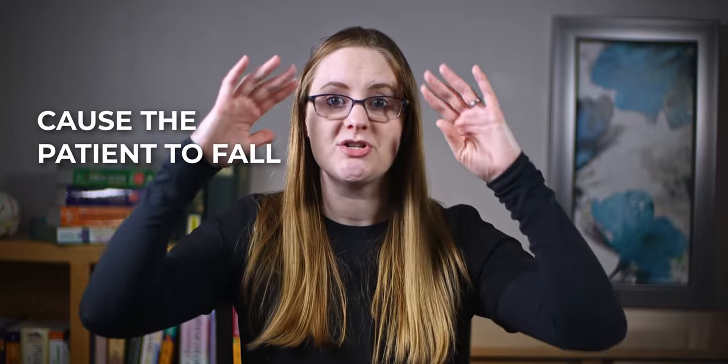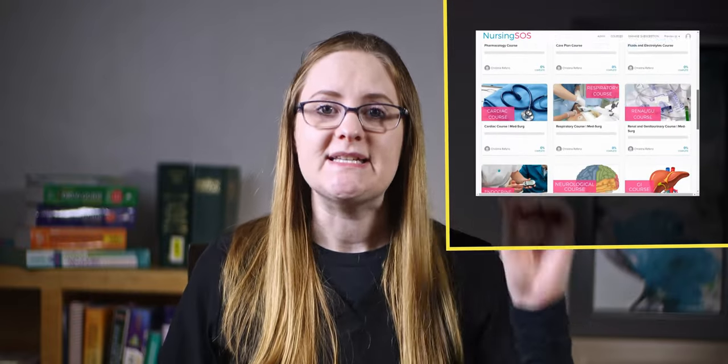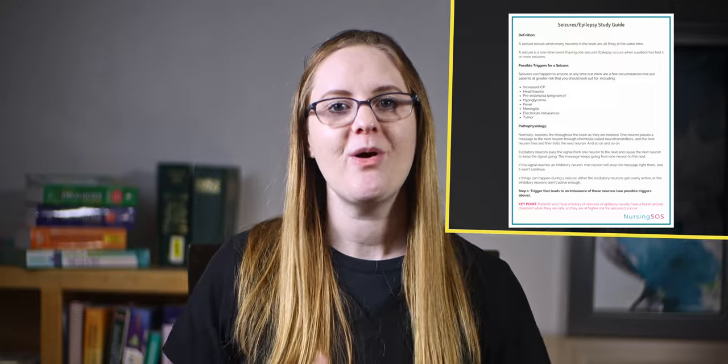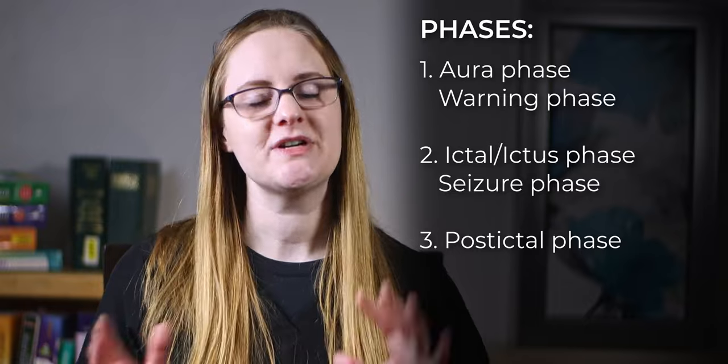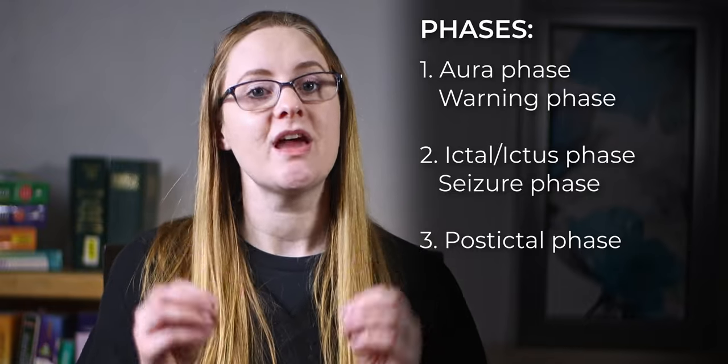The last type is an atonic or akinetic seizure, also called a drop seizure or drop attack. This is the opposite of tonic-clonic or myoclonic seizures: instead of rigidity and jerking, the muscles suddenly go flaccid with no muscle tone. This can cause the patient to fall, and some patients may need to wear a helmet for protection when an atonic seizure occurs.